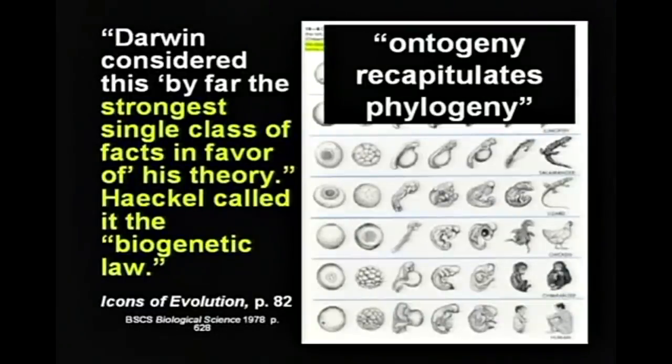Ontogeny is the growth of the baby — it goes through stages. Recapitulates means it reenacts or does over again. Phylogeny is the evolutionary sequence. This much is true: Ernst Haeckel was an accomplished artist and a passionate science communicator, but he failed to establish his biogenetic law because he made it too specific and dependent on what are now outdated ideas on the taxonomic orders.